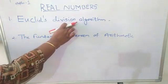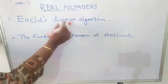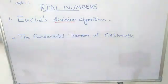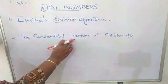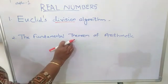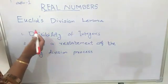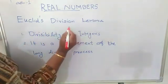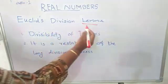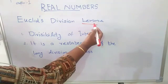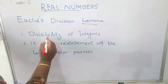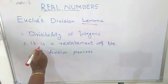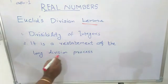Euclid's Division Algorithm, as the name suggests, has to do with divisibility of integers. On the other hand, the Fundamental Theorem of Arithmetic has to do with multiplication of positive integers. To learn Euclid's Division Algorithm, we have to learn Euclid's Division Lemma. A lemma is a proven statement which is used to prove other statements. Euclid's Division Lemma tells us about the division of integers and it is a restatement of the long division process.